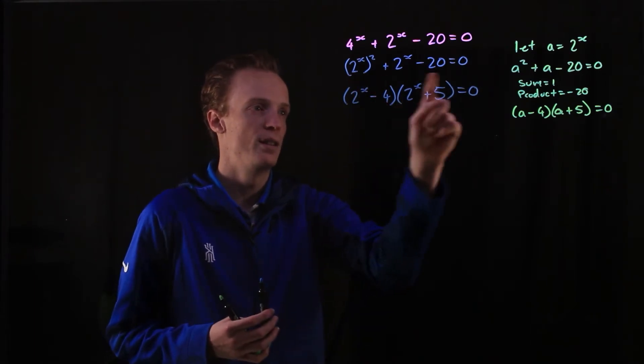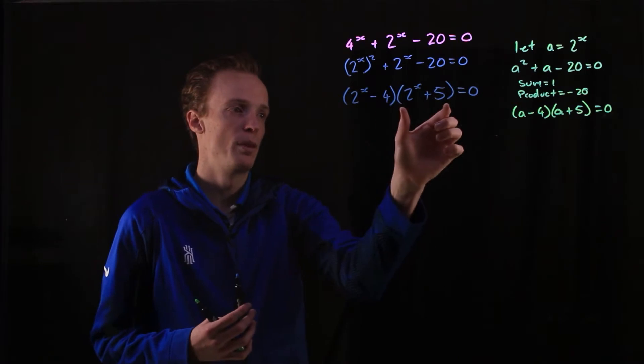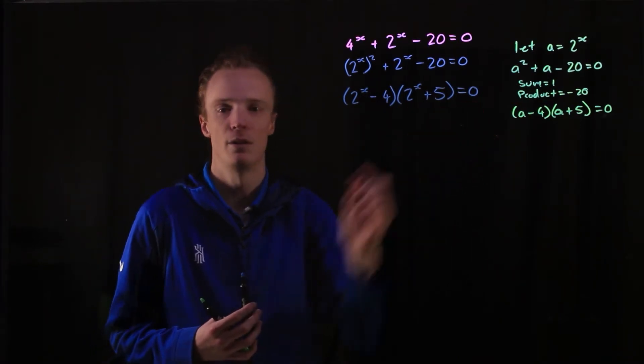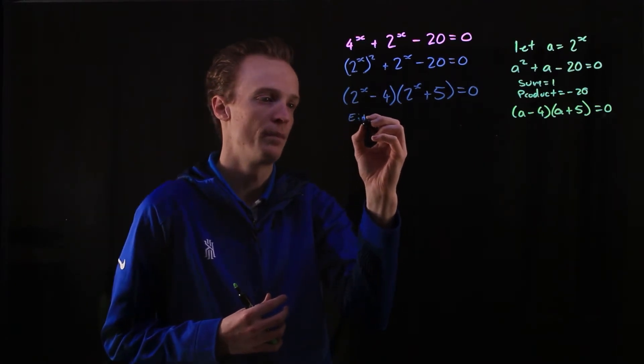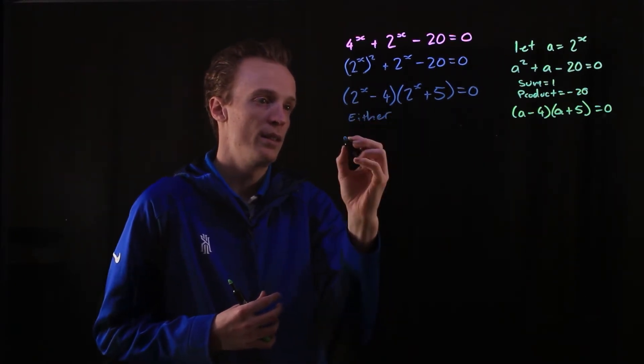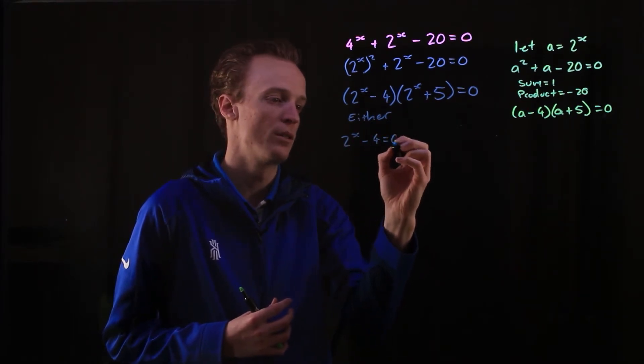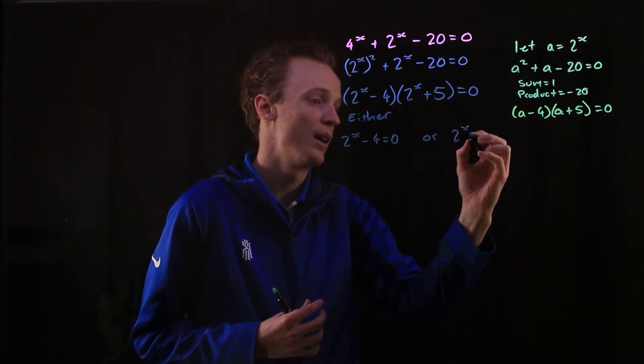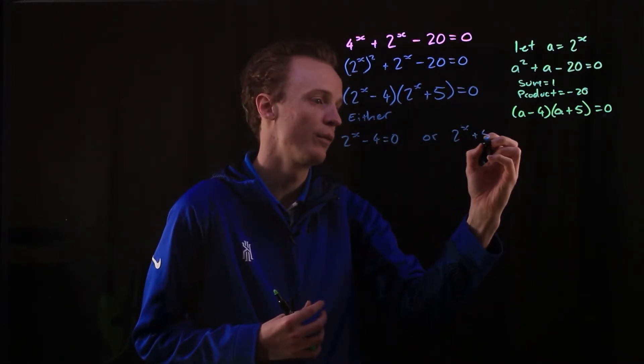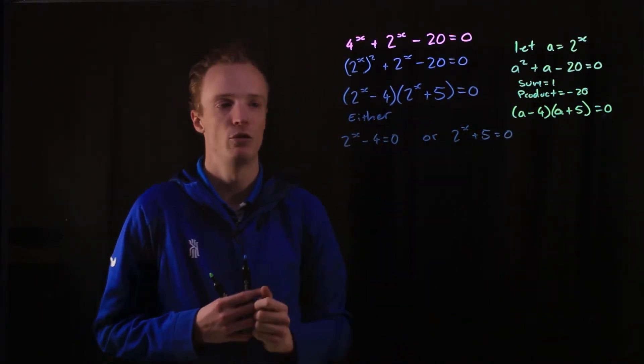And because this is a number multiplied by another number that's equal to zero, I can now use the null factor law that says that either this 2^x - 4 has to equal 0, or the 2^x + 5 is equal to 0. One of these has to be equal to 0 for this to be true.